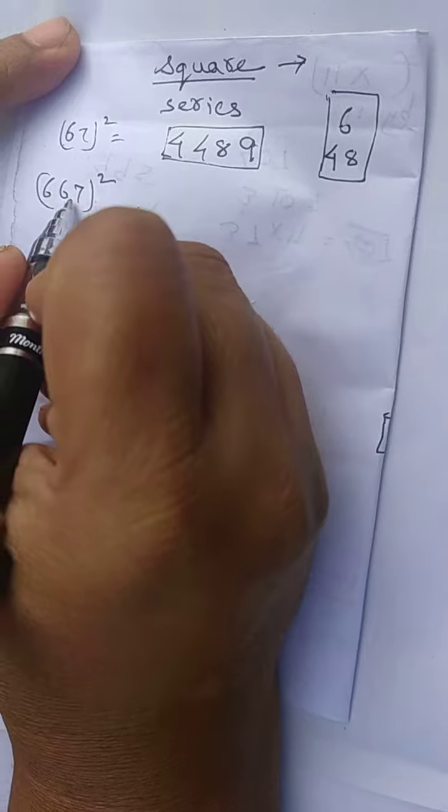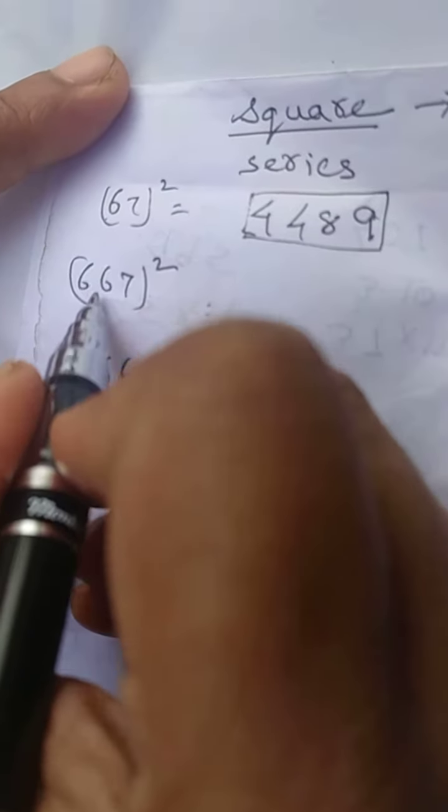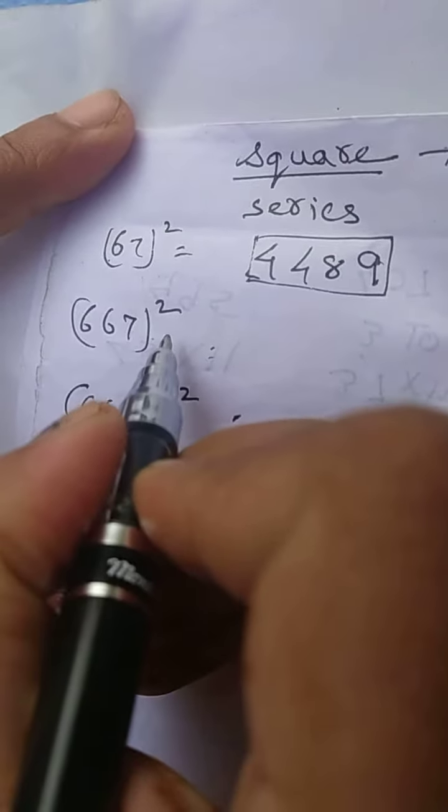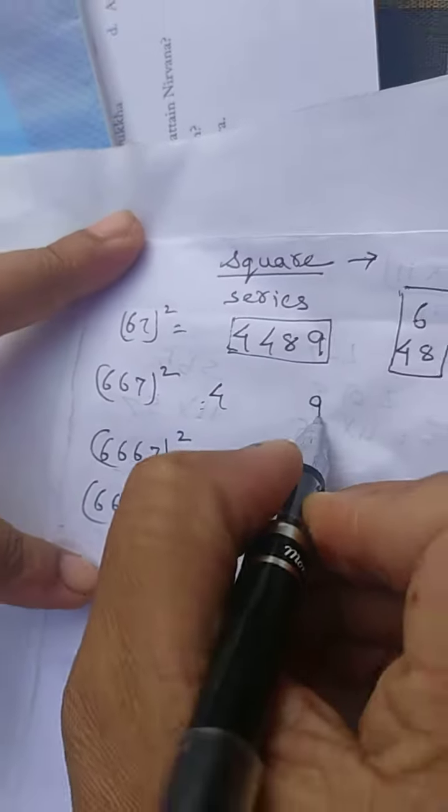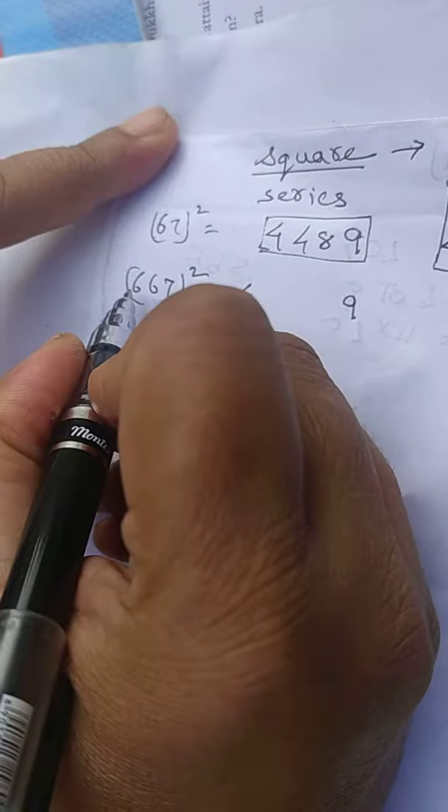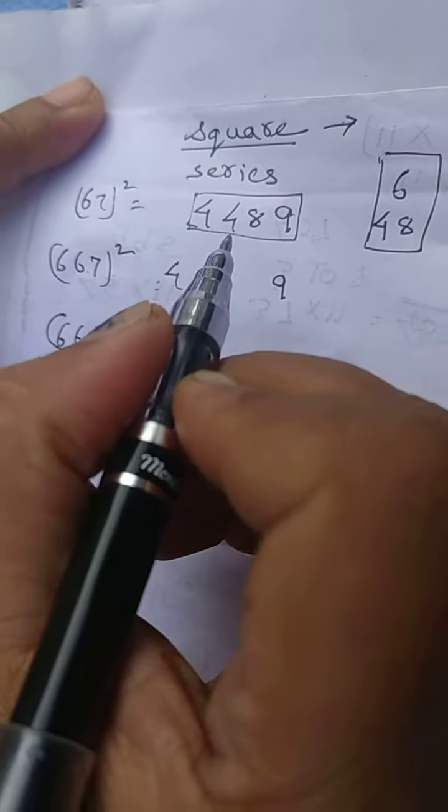If the number is 667, instead of multiplying 667 by 667, just use the trick. This ends in 7, so write 4 and 9 leaving space. How many 6s are there? Two. So two times you write 48: 4, 8, 4, 8. This is the answer.